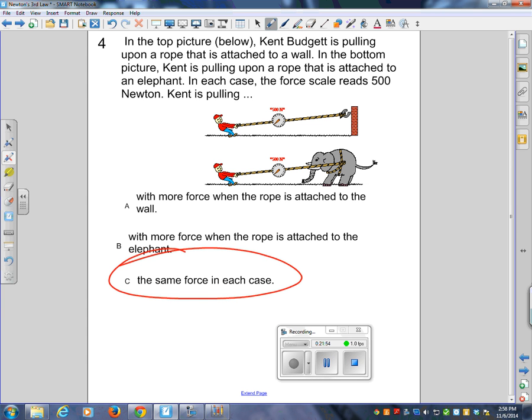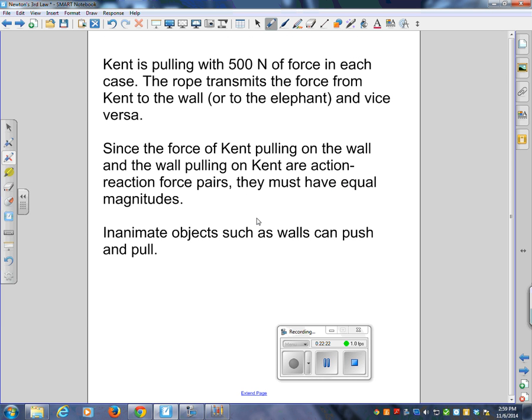In the top picture, Kent's pulling upon a rope that is attached to a wall. In the bottom picture, Kent is pulling upon a rope that is attached to an elephant. In each case, the force scale reads 500 newtons. Kent is pulling with more force when the rope is attached to the wall, more force when the rope is attached to the elephant, or the same. The scale says 500. How could it not be the same? Kent is pulling with 500 newtons of force in each case. The rope transmits the force from Kent to the wall or to the elephant and vice versa. Since the force of Kent pulling on the wall and the wall pulling on Kent are action-reaction force pairs, they must have equal magnitudes.